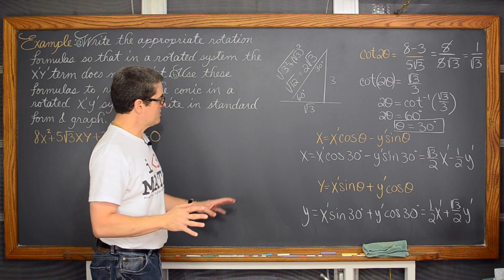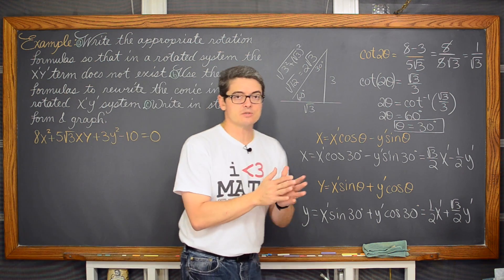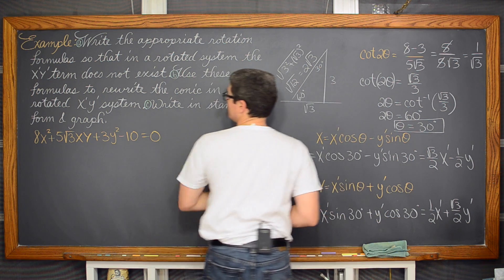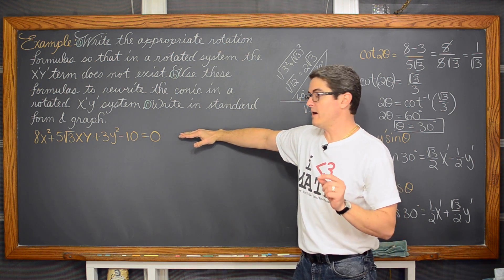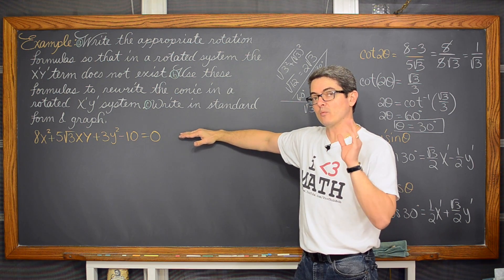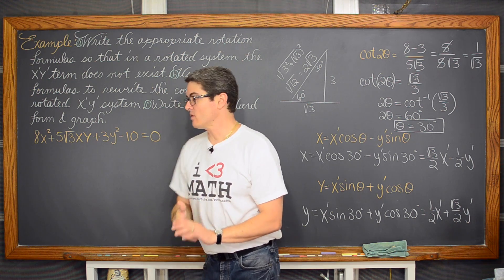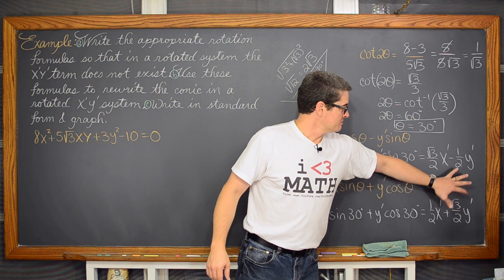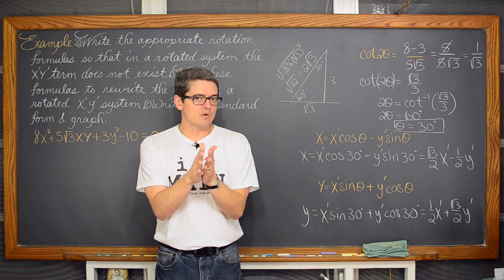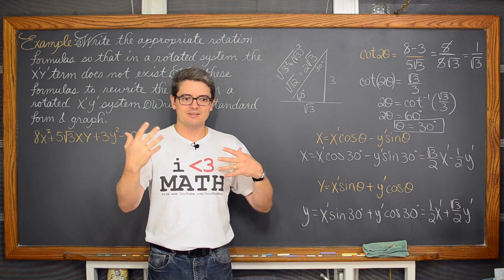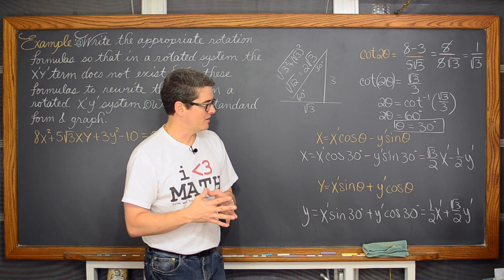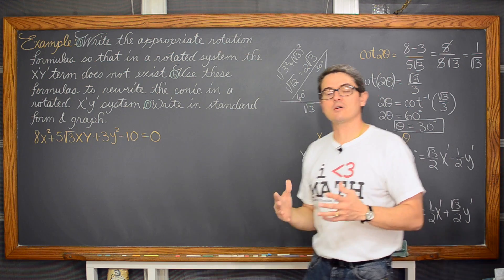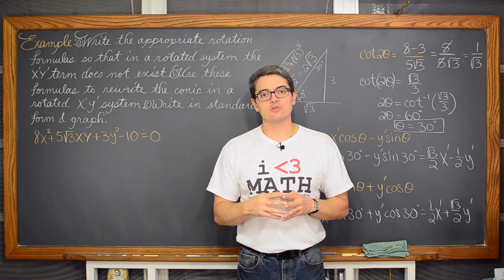Now we are going to clear off this board because I am running out of room, and get into the lengthy step of this process: using these formulas to rewrite the conic section in the rotated x-prime, y-prime system. Remember, when we are done, we should no longer have an xy term. I am going to do the substitution with these transformation equations and reveal the process one step at a time, then discuss any issues you might have working through all of that algebra.